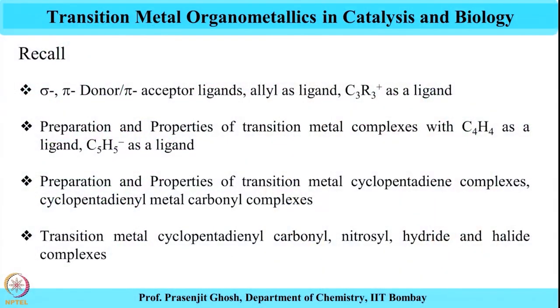Before we go further, let me recall some concepts discussed in earlier courses, as these will be essential for understanding the content in the next few lectures. To begin with, we had looked at various kinds of ligand systems that stabilize transition metal organometallic compounds, particularly from their bonding perspective, including sigma donor, pi donor, and pi acceptor ligands, examining the various orbitals involved in bonding with the metal.